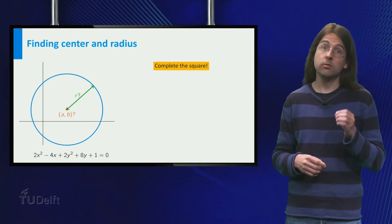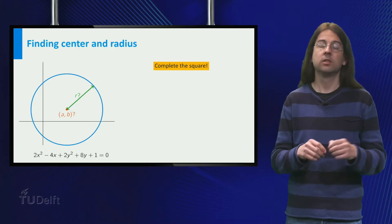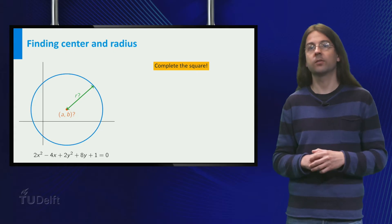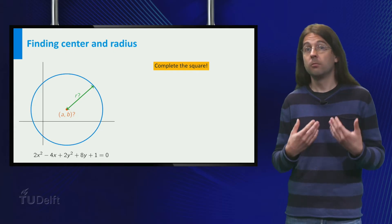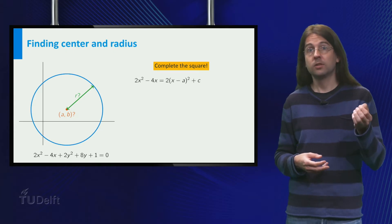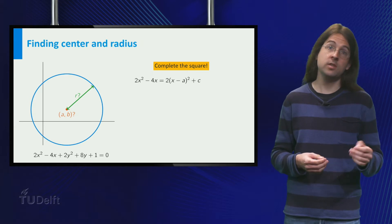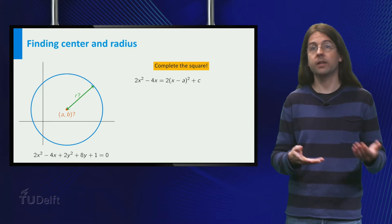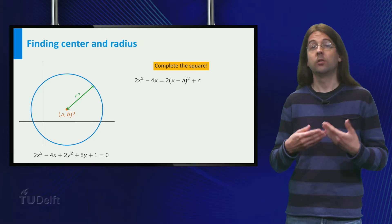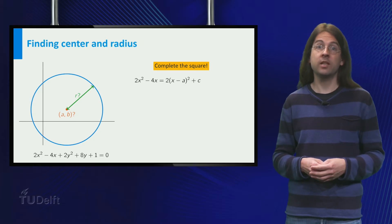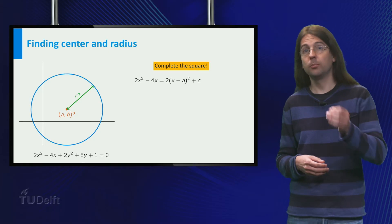For the x-coordinate, you consider the x part, 2x squared minus 4x. We want to write it as 2 times x minus a squared plus c for some values of a and c. The 2 in front of the x minus a squared is of course the 2 from 2x squared.